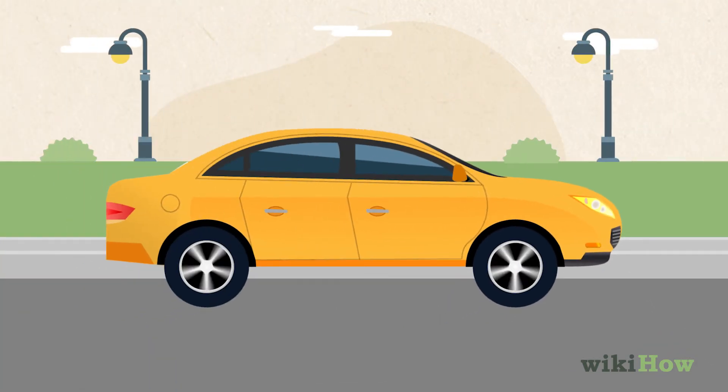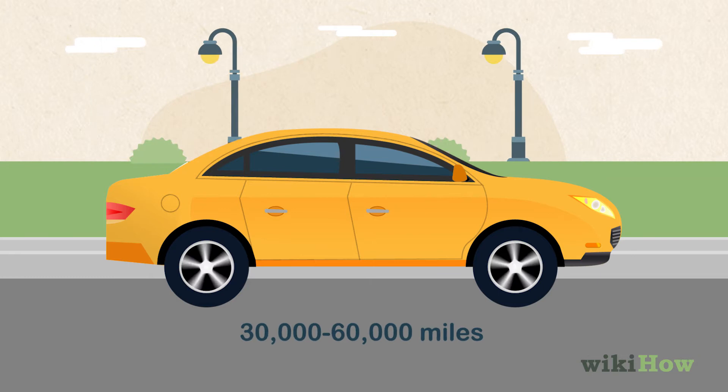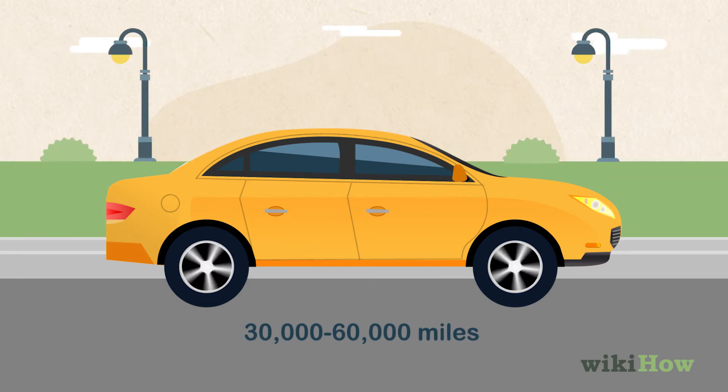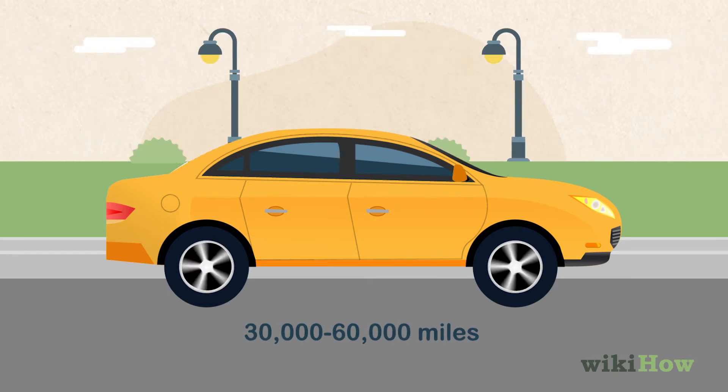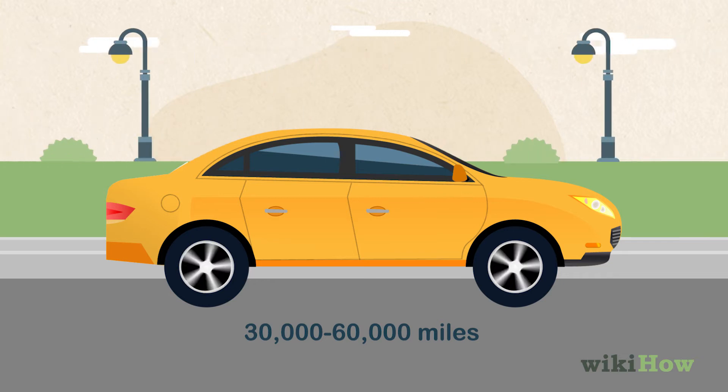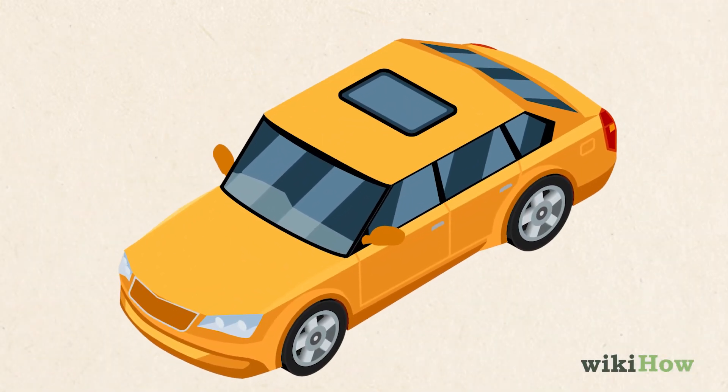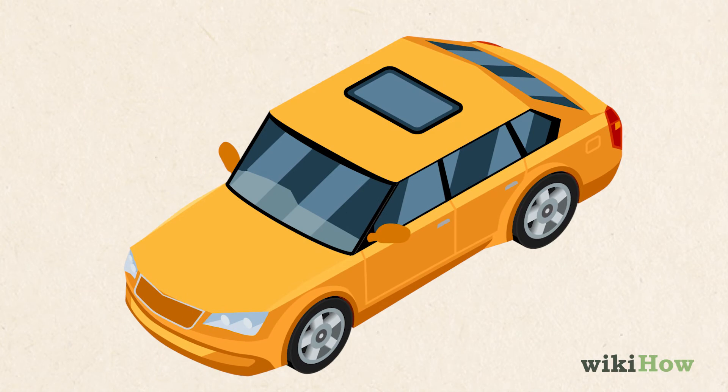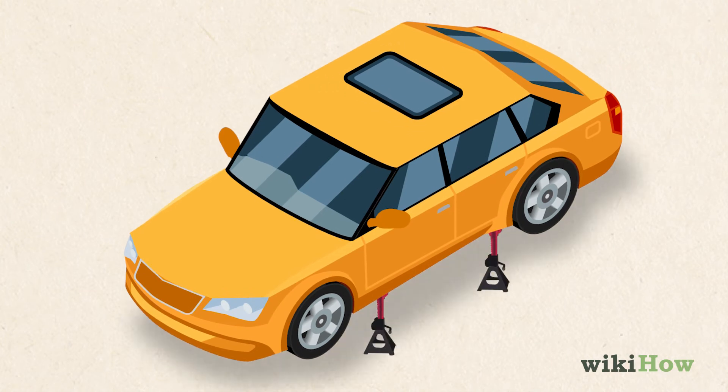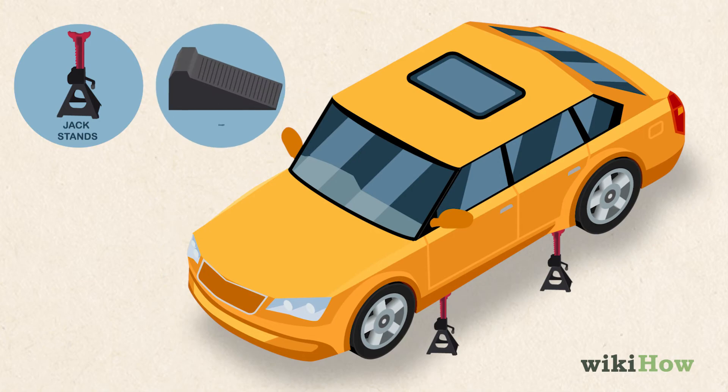Transmission fluid usually needs to be changed out every 30,000 to 60,000 miles, or 48,280 to 96,560 kilometers. To change your vehicle's transmission fluid, first park your vehicle on a flat surface and raise each side up with jack stands or a ramp.